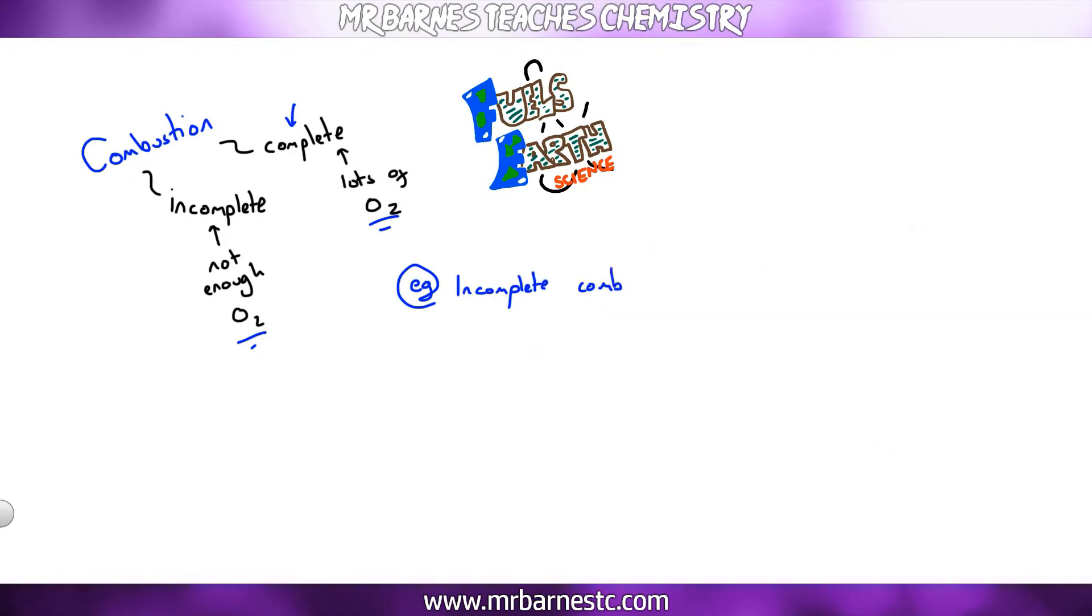If we have a look at an incomplete combustion example, what is the balanced equation for the incomplete combustion of methane to produce carbon monoxide and water vapor? And it will tell you in the question that methane is CH4. So straight away, we put in CH4. It's combustion, so we're adding it to O2. And carbon monoxide, you just need to learn is CO, and water vapor is H2O. So that's going to get you most of the marks in this question. Then all we need to do is balance it. So count up again. One carbon, four hydrogen, and two oxygen on the left. One carbon, two hydrogen, and two oxygens on the right.